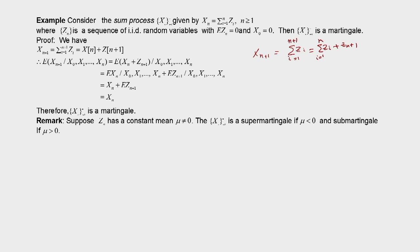Therefore, if we have a sum process where each increment has zero mean (E[Z_n] = 0) and the Z_n are i.i.d., then this process is a martingale. If instead Z_n has a constant non-zero mean μ, then X_n is a super martingale if μ < 0, and a sub martingale if μ > 0. This example illustrates martingale, super martingale, and sub martingale.